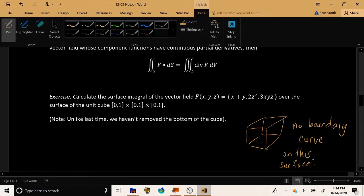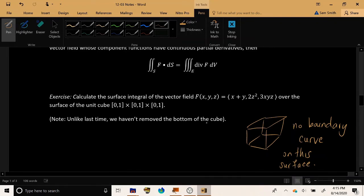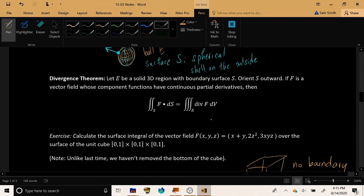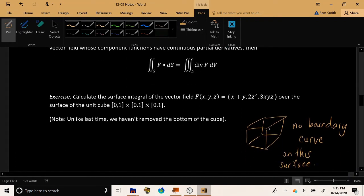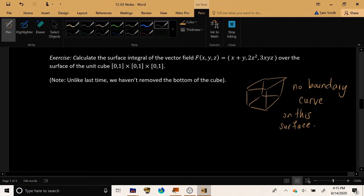So that means Stokes Theorem is not in play. Stokes Theorem could only be applied when the surface had a boundary curve, but this cube does not. So instead of that, we're going to go ahead and we're going to use Divergence Theorem, which says don't think about the line on the boundary of the surface. Think about the surface as the boundary of somebody else.